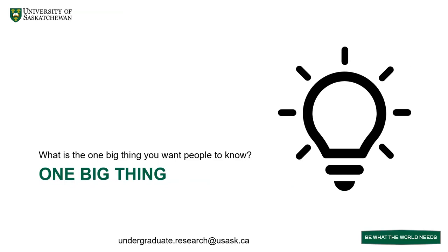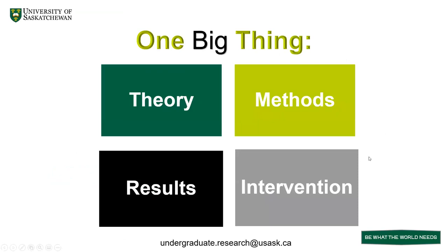What's the one big thing that you want people to know? If you take nothing else out of this presentation, this is where I want you to think. This comes from Mike Morrison and his Better Posters work. The one big thing can be all kinds of things in terms of your research. For some of you, your one big thing might be theory — you might be making really big inroads in theory. This applies more to social science or humanities, where you might be working on a new particular theory. It can be an aspect and the biggest part of your research.